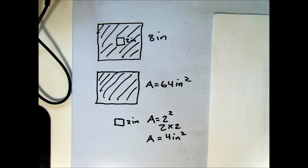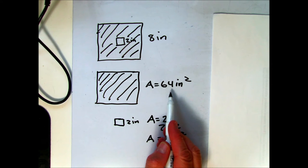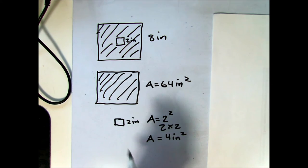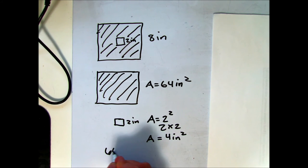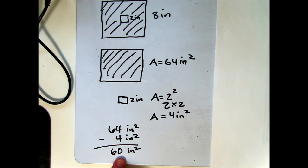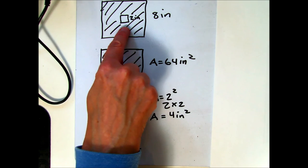By subtracting the opening from the total area, we'll be able to find the area of the shaded region. So 64 inches squared minus 4 inches squared will give us 60 inches squared. Again, this amount does not include the opening in the middle. It only includes the shaded area on the outside of that smaller square.